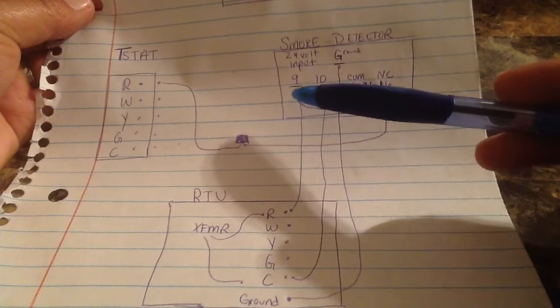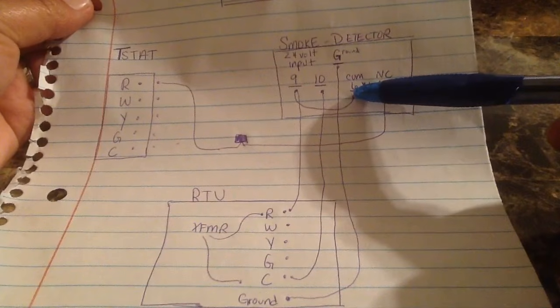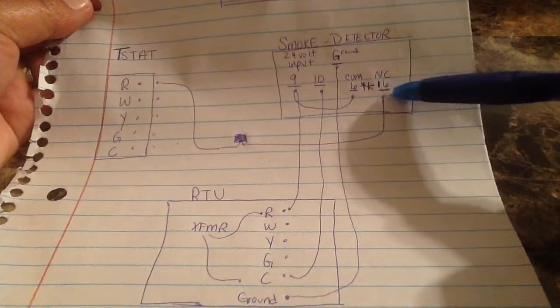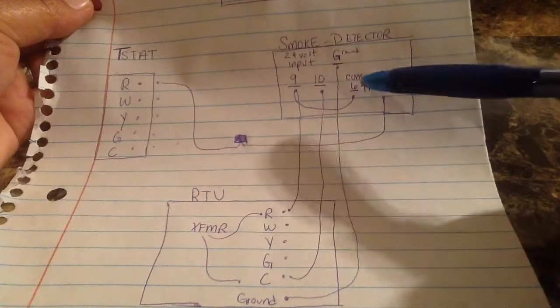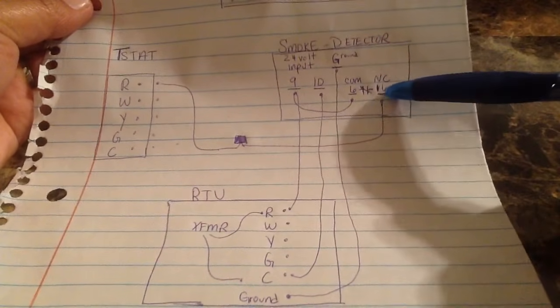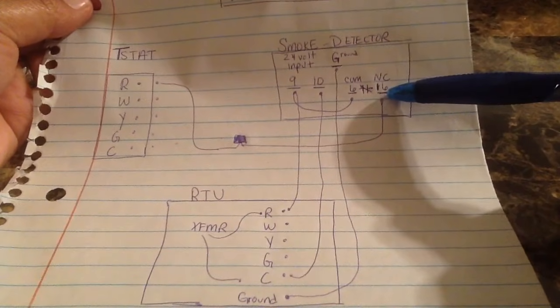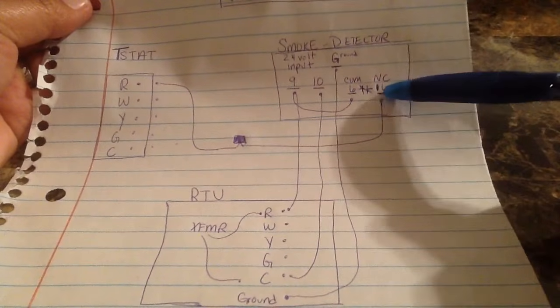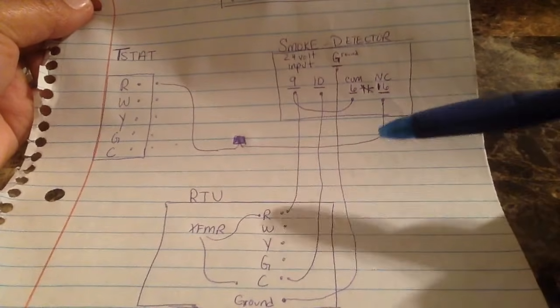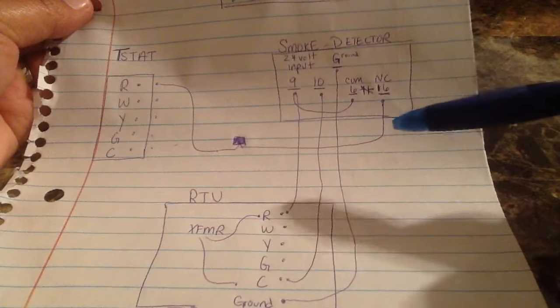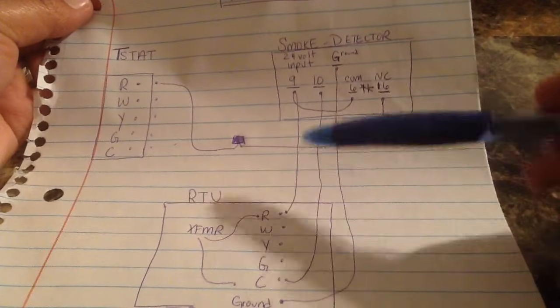And then what we're going to do is we're going to put a jumper between terminal nine and six, which is common. And typically you're going to have a normally closed or normally open switch to six. We use the normally closed switch which is labeled typically number sixteen, and then sixteen we're passing it back out to R at the thermostat. So we're breaking R at the thermostat, and then of course you have your ground.